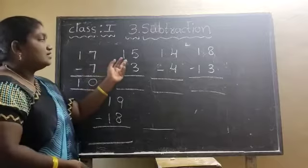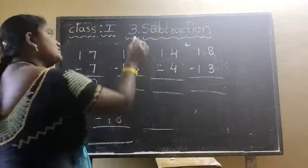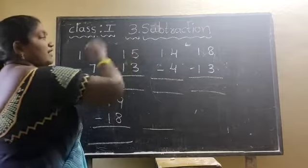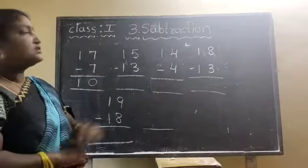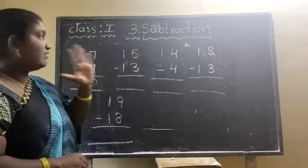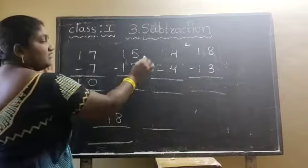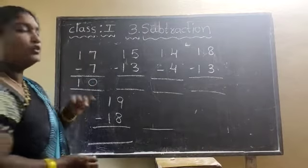Next, second is 15 minus 13. First, 1th place is 5. First, 5 number is 1. So, first of 5, open 5 fingers and close 3 fingers. 1, 2, 3. Remaining are 1, 2.